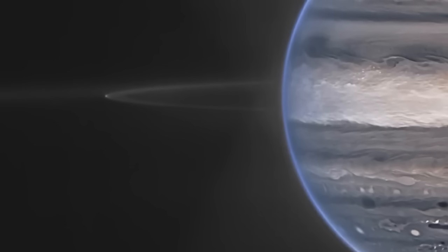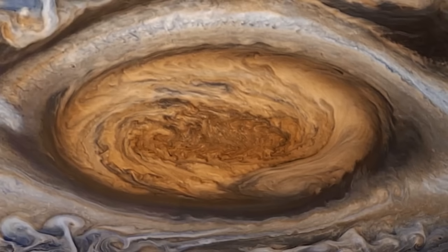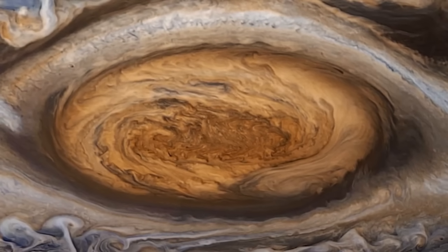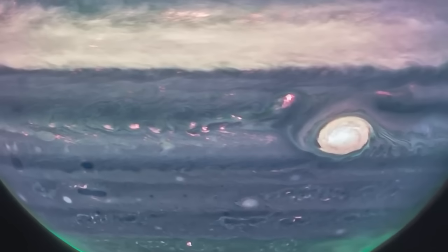The Great Red Spot, which appears white on the picture because of the large amount of sunlight it reflects, is actually a massive storm big enough to envelop the entire Earth.